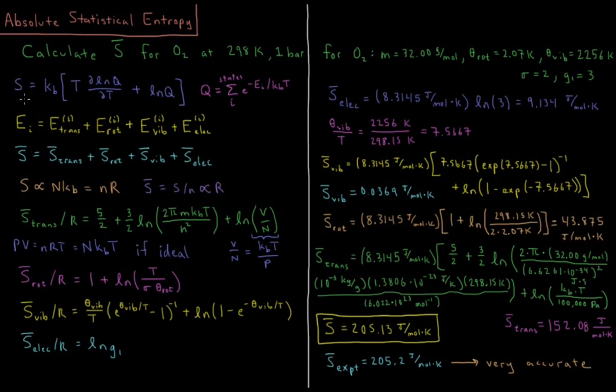From our previous videos on entropy and statistical mechanics, we said that the entropy is equal to the Boltzmann constant times the temperature times the partial derivative of the natural log of the partition function with respect to T plus the natural log of the partition function. The partition function was equal to a sum over all the states of a system of e to the minus energy of that state divided by the Boltzmann constant times temperature. So we did this in the statistical mechanics chapter for translational, rotational, vibrational, and electronic energy levels of a given atom or molecule.